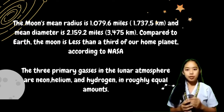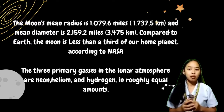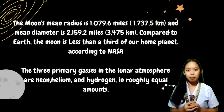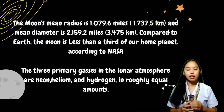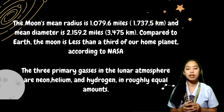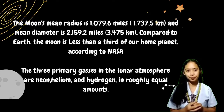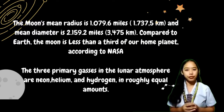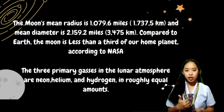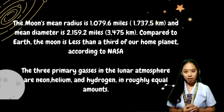According to NASA, the Moon's radius is 1,079.6 miles or 1,737.5 kilometers, and its diameter is 2,159.2 miles or 3,475 kilometers. The three primary gases in the lunar atmosphere are neon, helium, and hydrogen in roughly equal amounts.